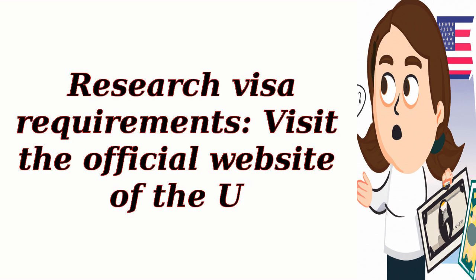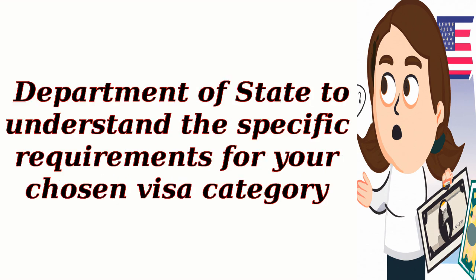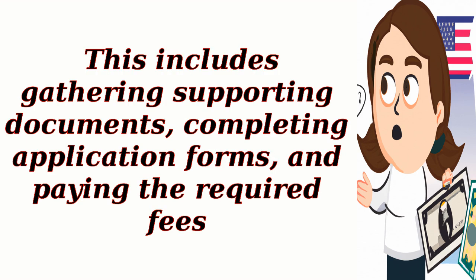Step two: research visa requirements. Visit the official website of the U.S. Department of State to understand the specific requirements for your chosen visa category. This includes gathering supporting documents, completing application forms, and paying the required fees.